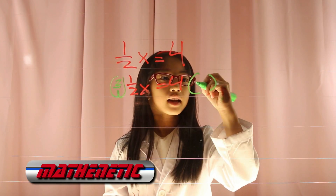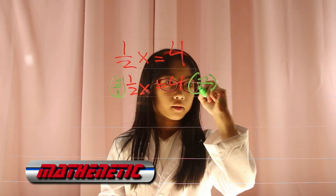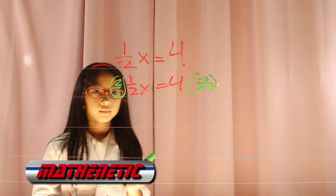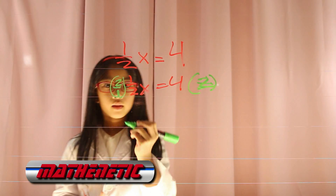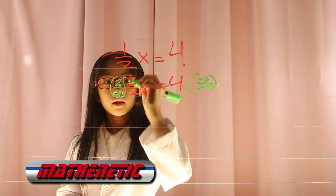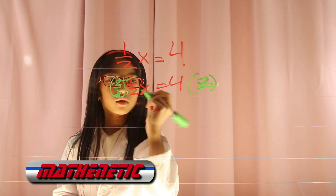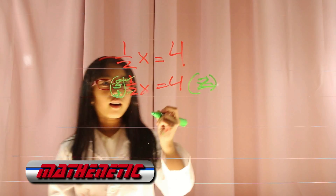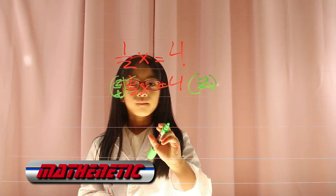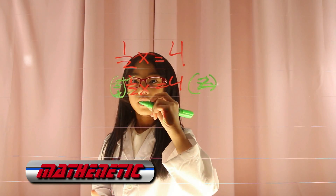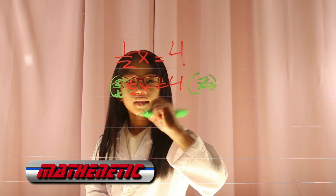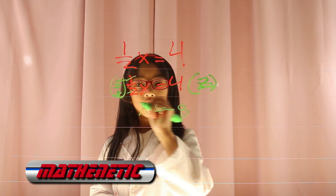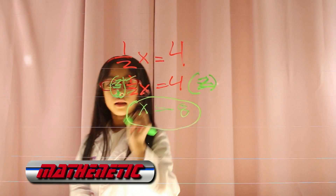Also, on the other side, multiply by 2. The 1 and the 1 cancel, and the 2 and the 2 cancel. Bring the x down — equals 4 times 2 is 8. x equals 8.